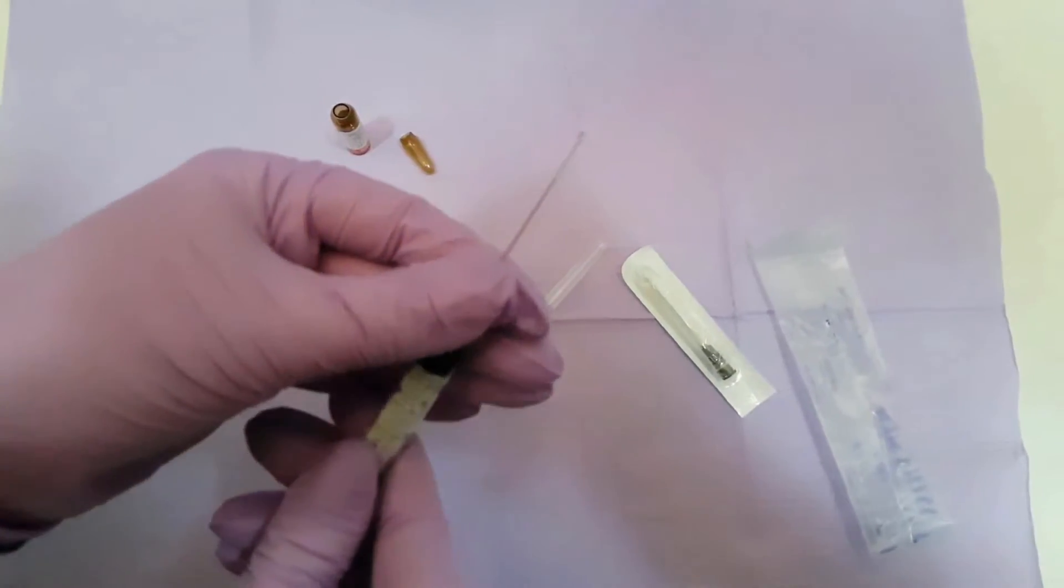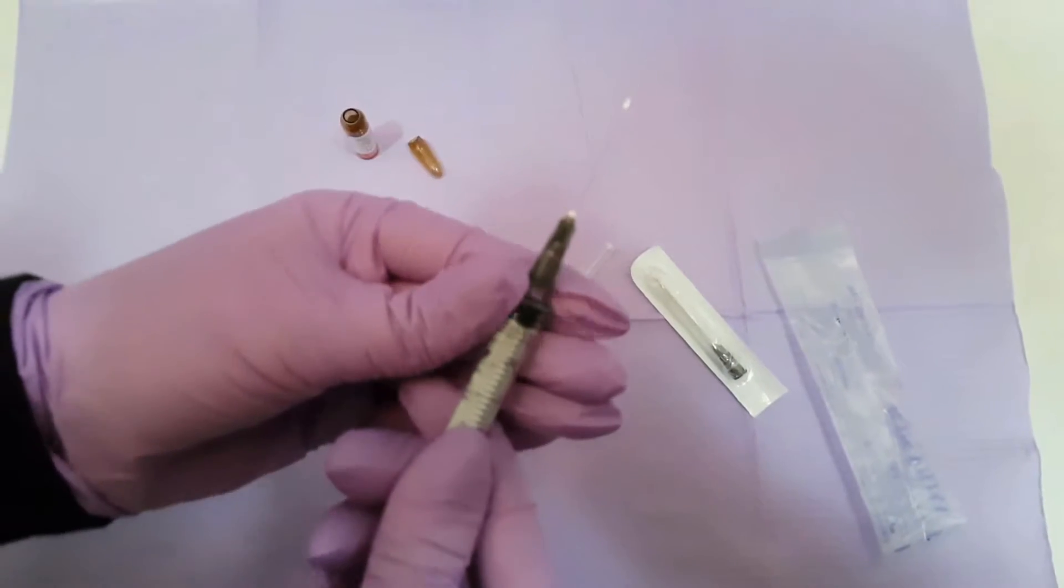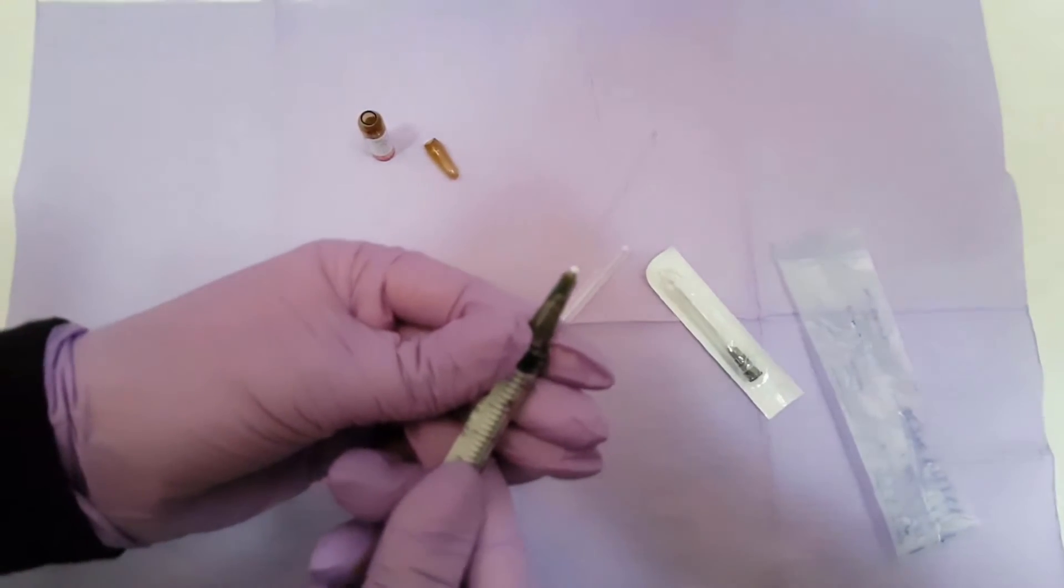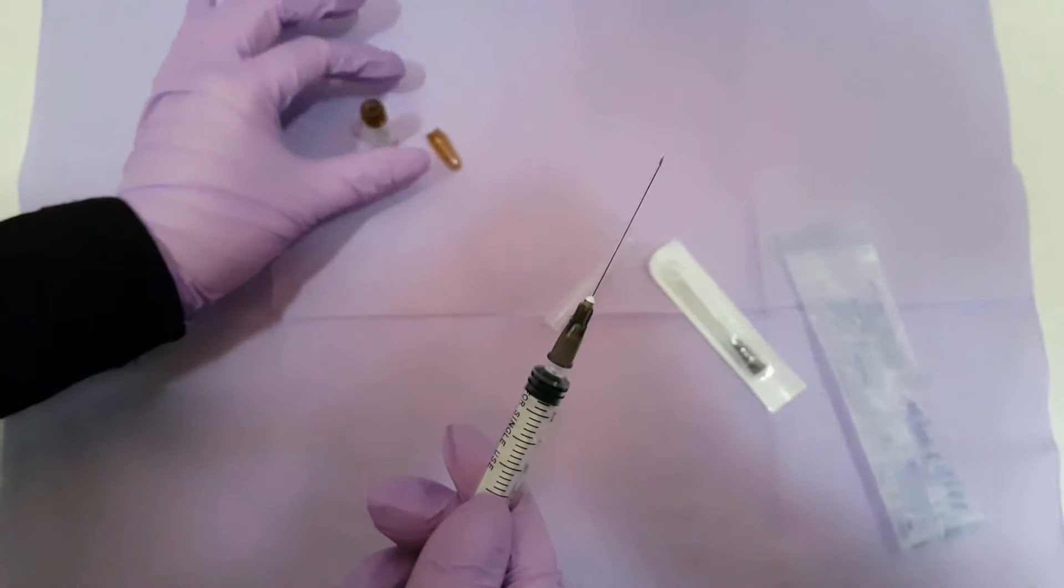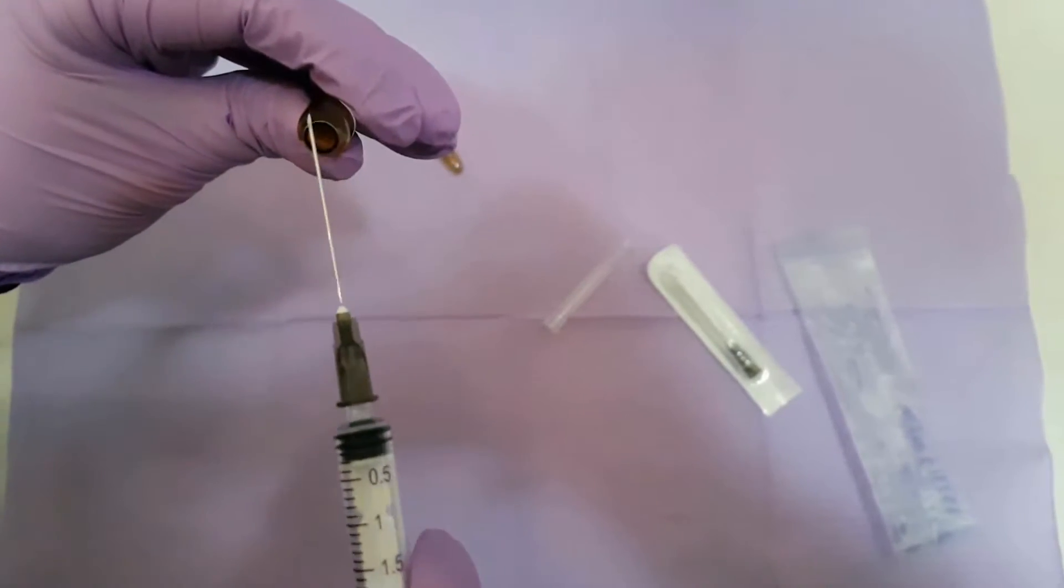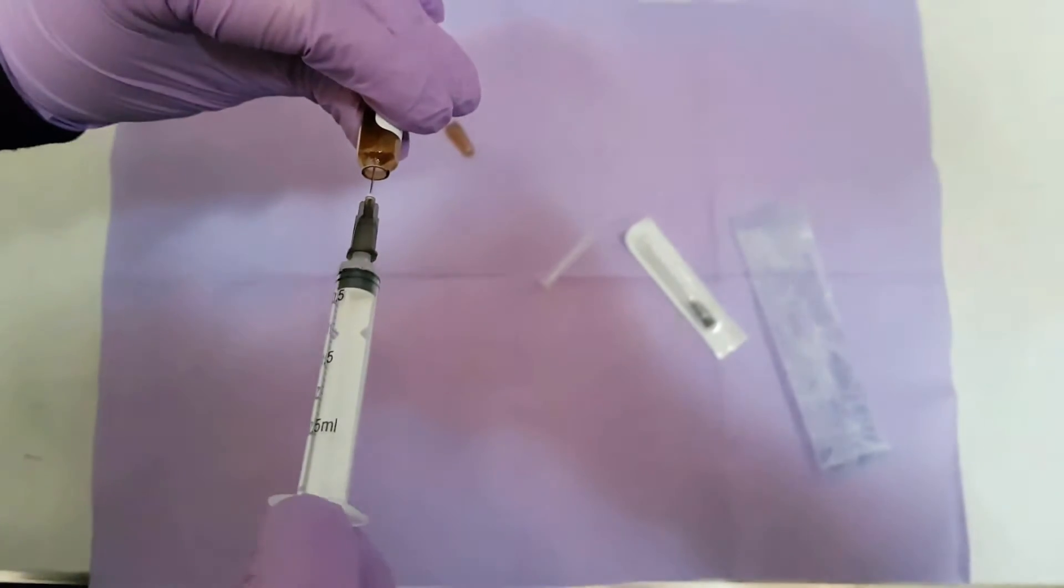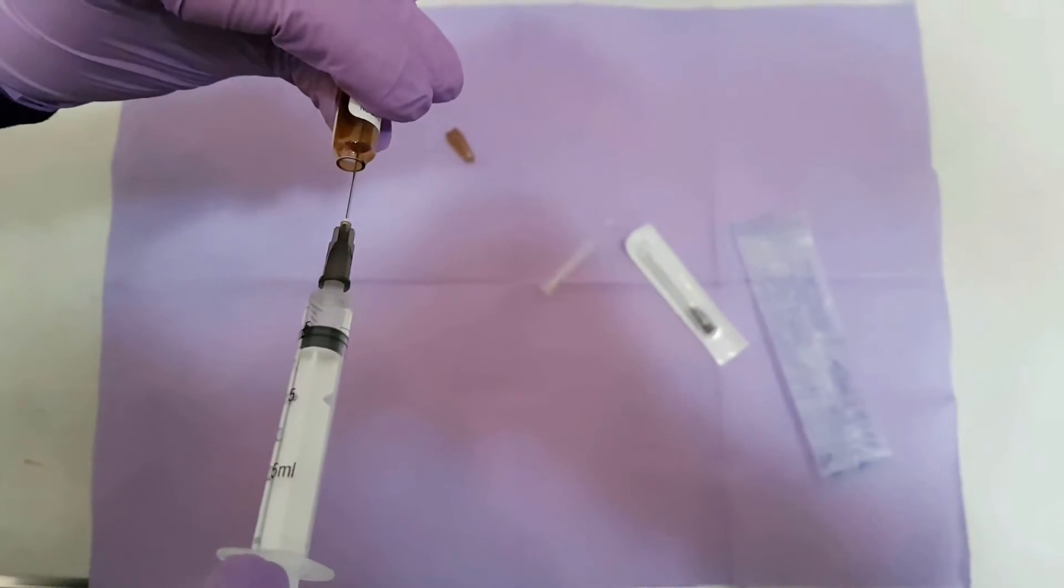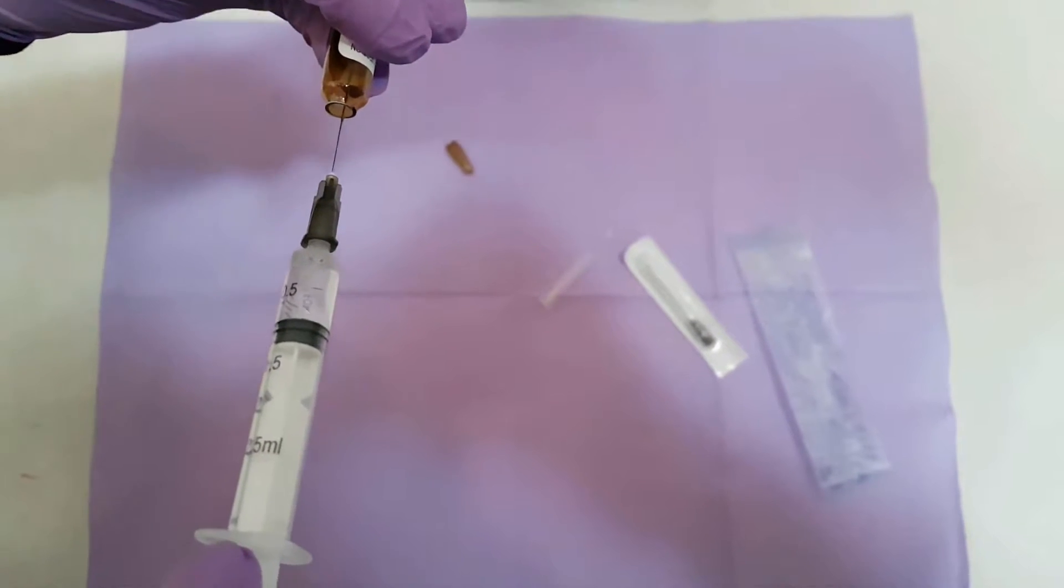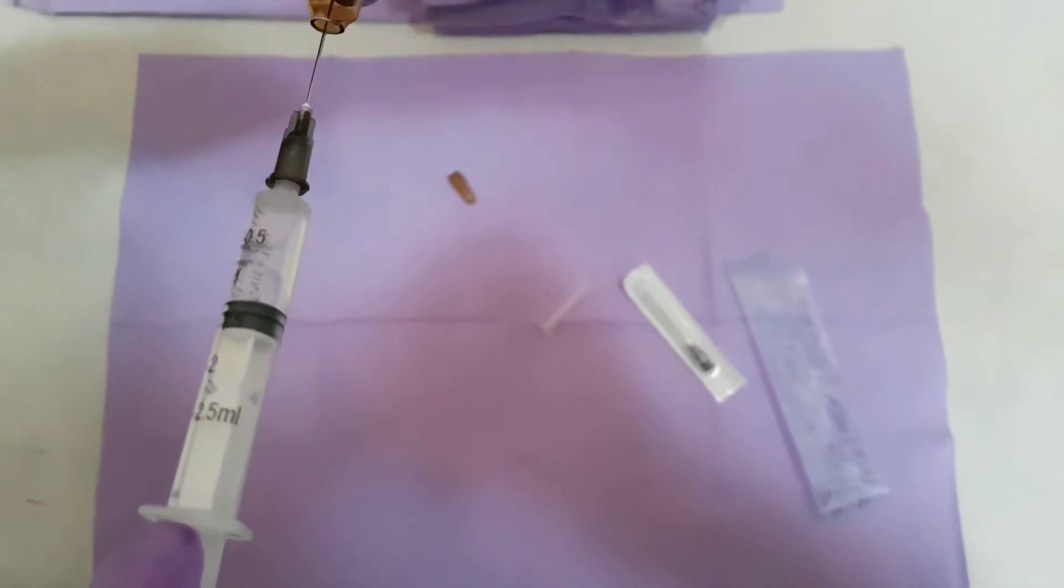The form of the ampoule is made so that the liquid doesn't go out of it but into the needle. We take the local anesthetic with the needle from the ampoule.